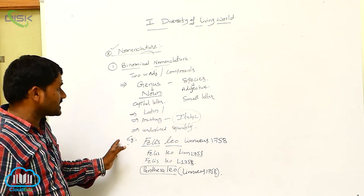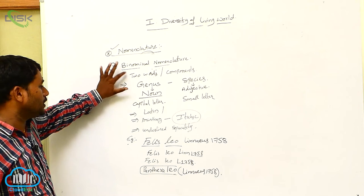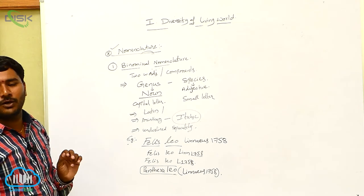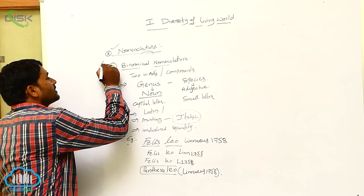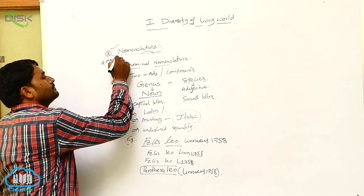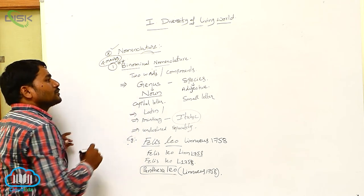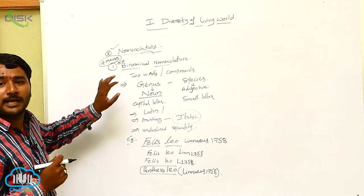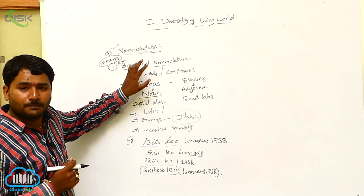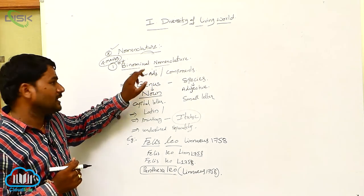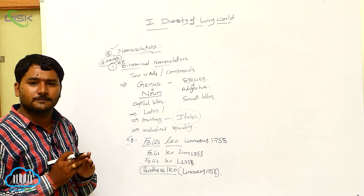So these are the steps we have to follow when doing binomial nomenclature — this is very important for marks questions. Binomial nomenclature was proposed and popularized by Carolus Linnaeus in the 10th edition of his Systema Naturae book.